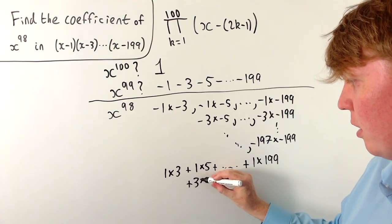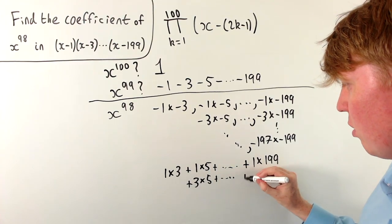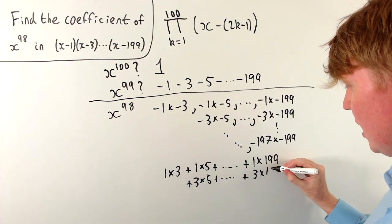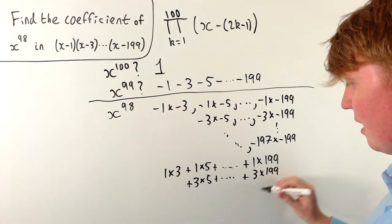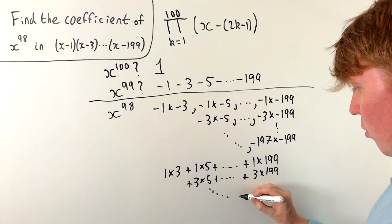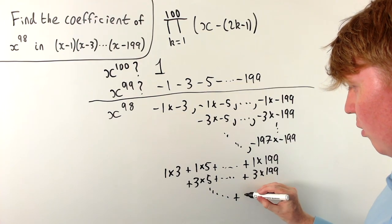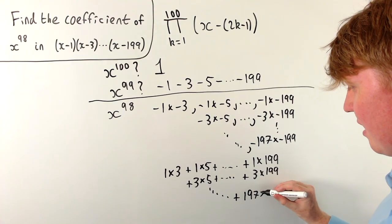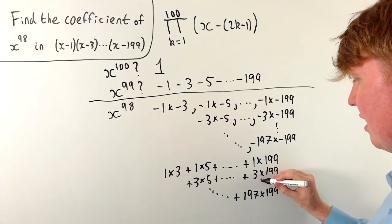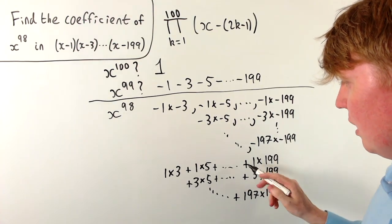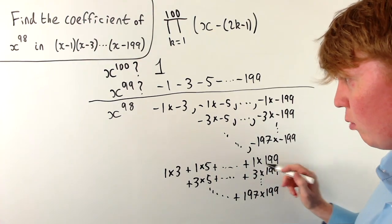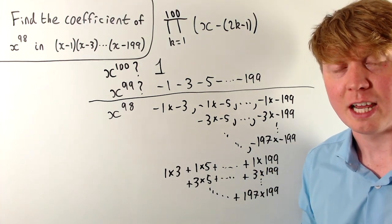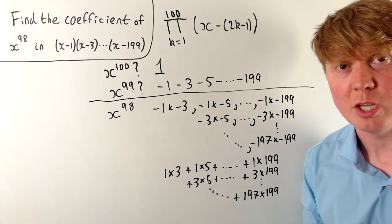Writing the sum out explicitly: we have 1×3, plus 1×5, all the way up to 1×199, then plus 3×5 and all pairs involving 3 up to 3×199, continuing all the way until the final term is 197×199. We need to evaluate this sum to find the coefficient of x^98.